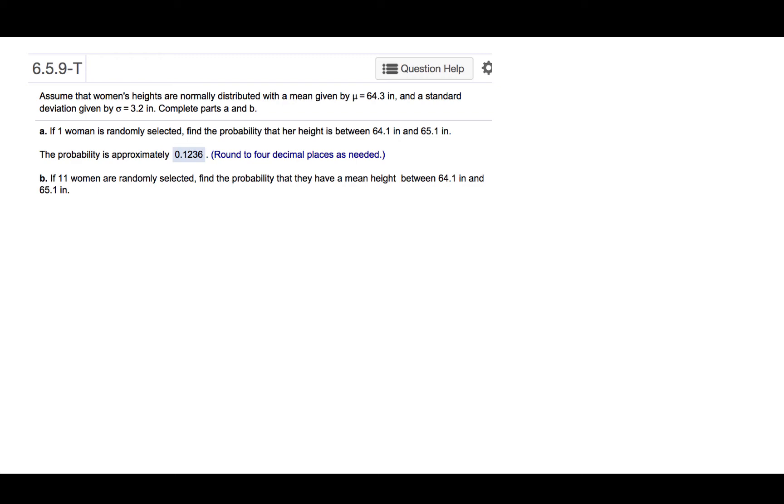Part A: If one woman is randomly selected, find the probability that her height is between 64.1 inches and 65.1 inches.